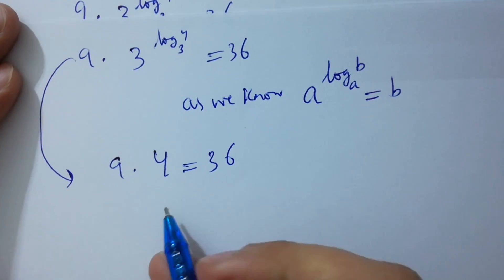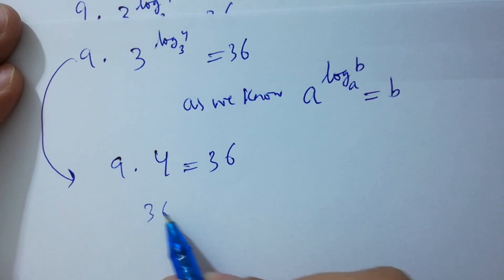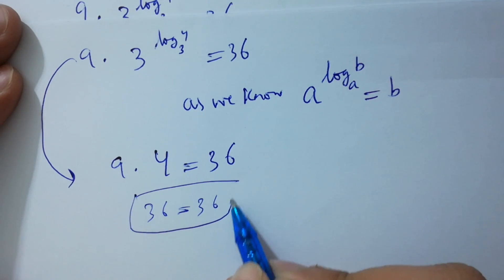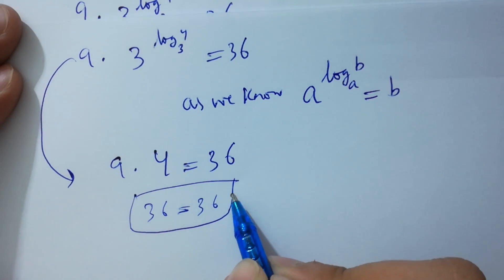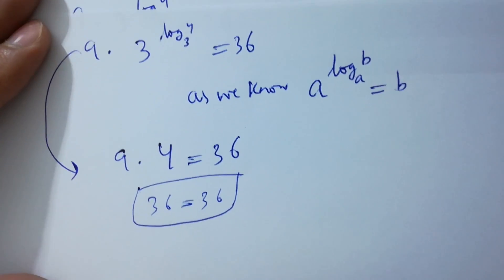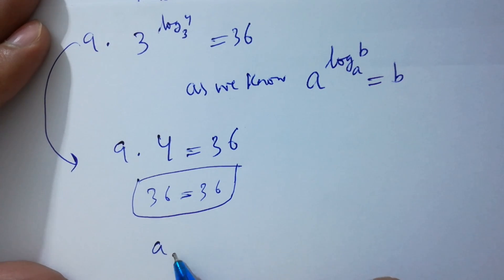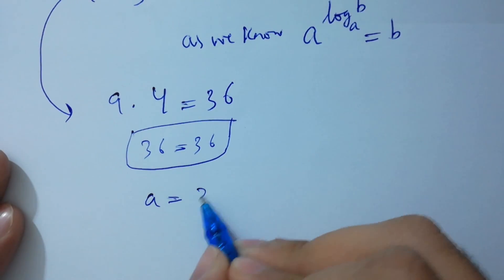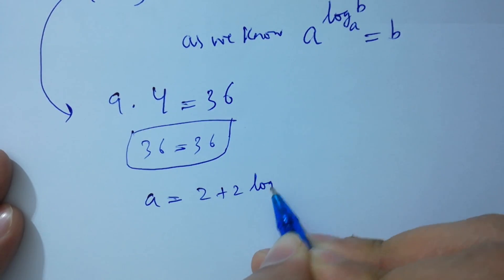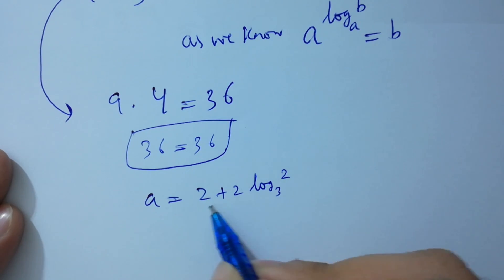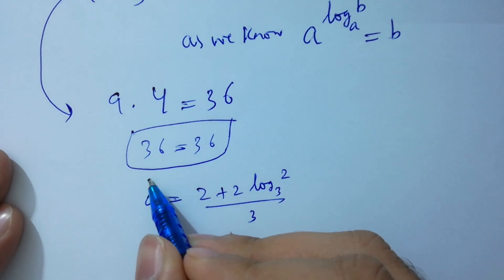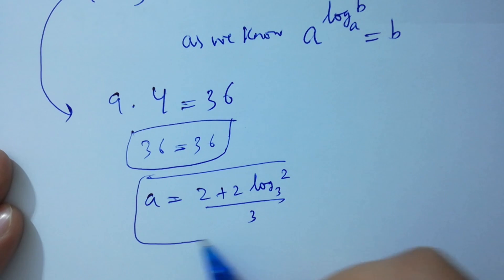We have 9 times 3 to the power log 4 to the base 3 equals 36. As a to the power log b to the base a equals b, it follows that 9 times 4 equals 36, which gives 36 equals 36. This confirms that a equals (2 plus 2 log 2 to the base 3) over 3 satisfies the given equation.